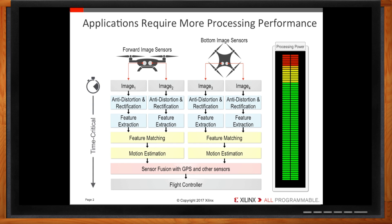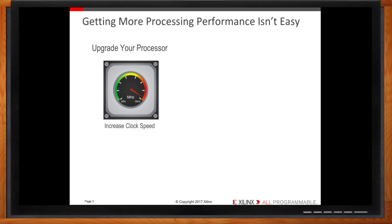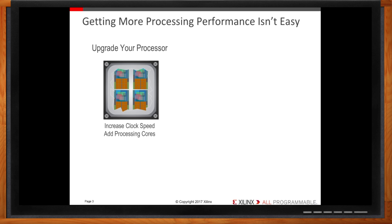So how do we get the processing performance we need — a faster processor, maybe? Ultimately, it depends on your application. There are multiple ways to achieve more processing performance, but none of them are easy. As a software engineer, I'd be inclined to increase my processor clock speed, maybe go up a speed grade. Another option would be to add more processing cores, or upgrade to the latest and greatest multi-core processor. But these options aren't flawless — processing capability would increase, but so would power consumption, heat, and cost.